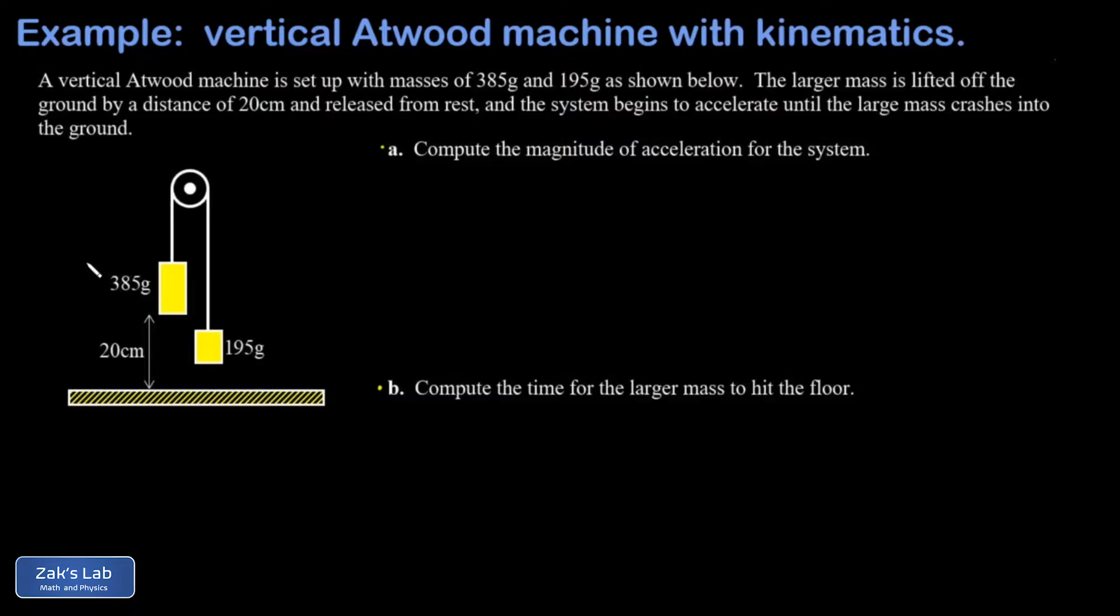The first thing I want to do here is convert the masses to kilograms, and that just requires shifting the decimal place three times. So our large mass is 0.385 kilograms and our small one is 0.195 kilograms.